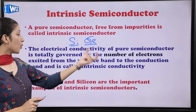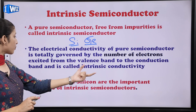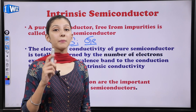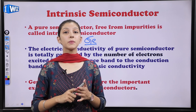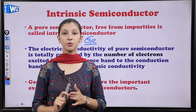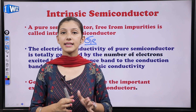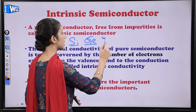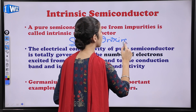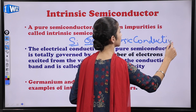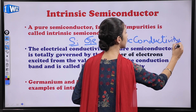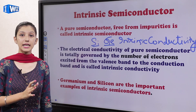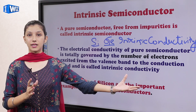The electrical conductivity of a pure semiconductor is totally governed by the number of electrons excited from the valence band to the conduction band, and is called as intrinsic conductivity. Semiconductors mein valence band and conduction band ke beech mein approximately energy gap rehta hai less than 3 electron volts. Jitne number of electrons valence band se uthkar conduction band mein pahunch chuke hain, wohi intrinsic conductivity ki value decide karengi.